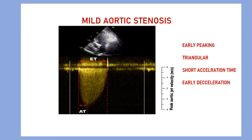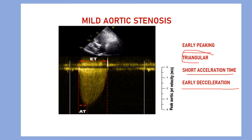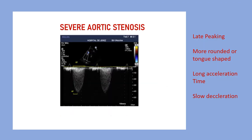In mild aortic stenosis, the peak velocity is attained very early. As a result, the Doppler signal has a triangular shape, because of early peaking, short acceleration time, and rapid acceleration. These three features — early peaking, short acceleration time, and rapid deceleration — give the Doppler signal a triangular shape, as visible here in mild aortic stenosis.